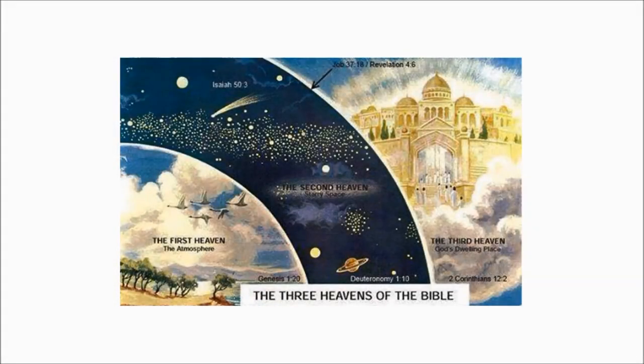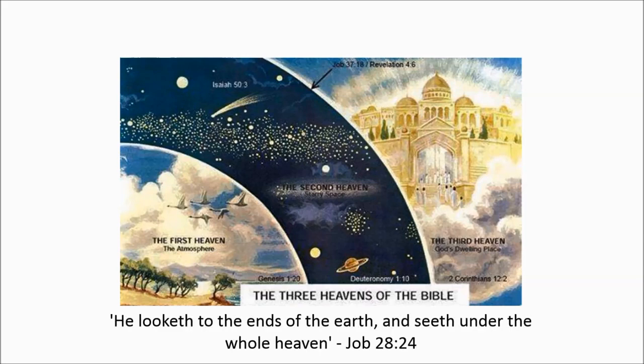What does make sense is the biblical description of the three heavens, where God's in his throne in the third heaven, and he can quite easily look under heaven and see to the ends of the earth. It makes sense. All scripture makes sense when you get rid of the modern cosmology, the Copernican heliocentrism.